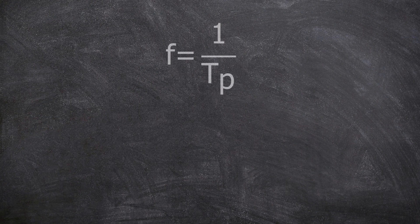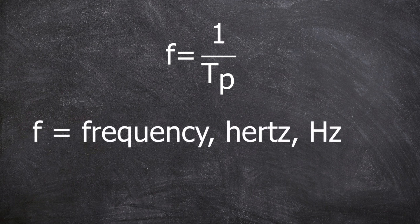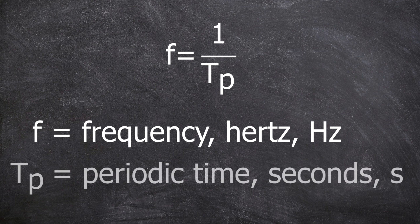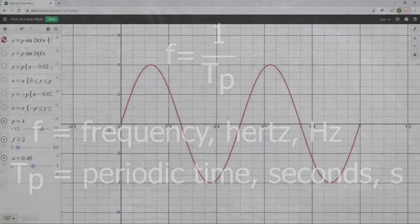There is a relationship between frequency and periodic time. Going to the blackboard, the formula is: f equals one over Tp, where f stands for frequency and Tp stands for periodic time. The frequency of a waveform equals one second divided by the periodic time of the waveform.